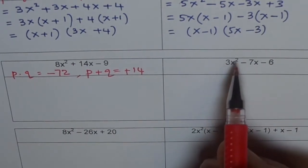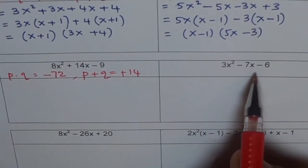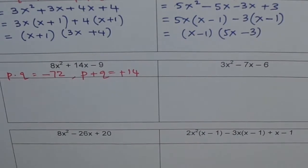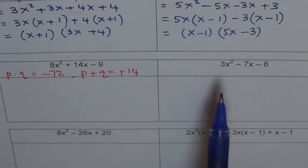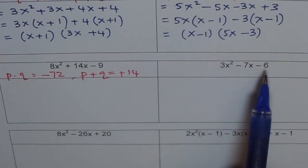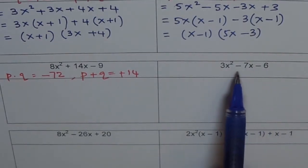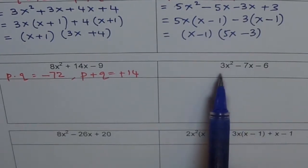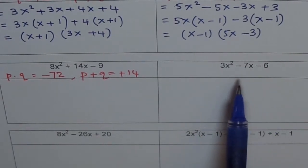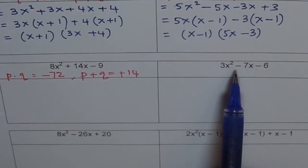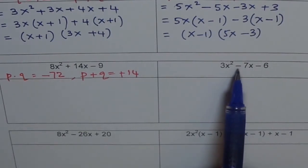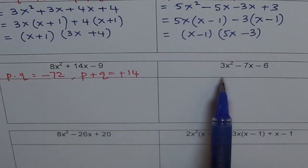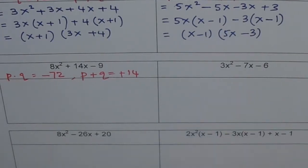Here is one more: 3x squared minus 7x minus 6. The product you are looking for is 3 times 6, which is 18, with a negative sign. And the sum should be negative 7. Again, the sum is negative, so the bigger number should be negative. The sign of the bigger number is always the sign of the center term. Try to get the answer yourself.